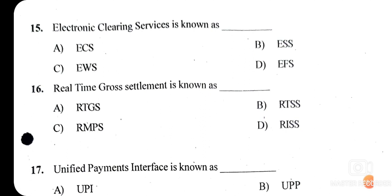Question sixteen: Electronic Fund Transfer — the right answer is RTGS, that is Real Time Gross Settlement. The right option is option A — RTGS. It is not RTSS, RMPS, or RISSS. RTGS is the right answer.